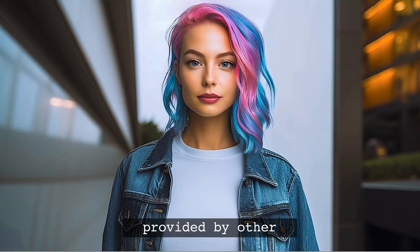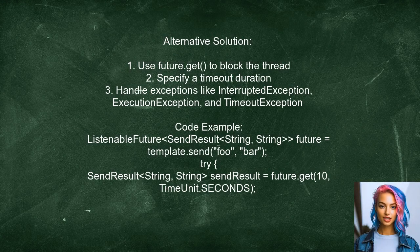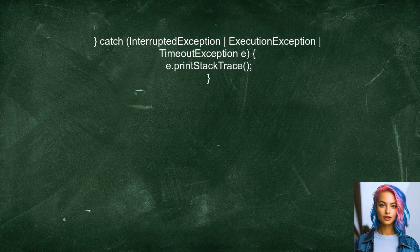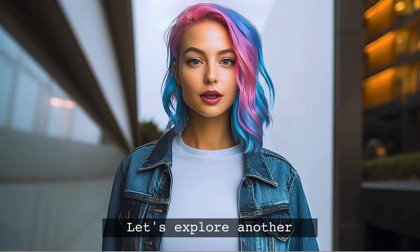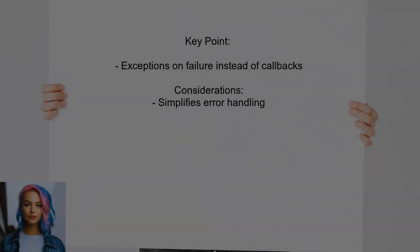Let's look at the answers provided by other users. An alternative approach suggested by another user is to block the calling thread until the result is available, using the future.get method to achieve this. Another user suggests using the get method on the ListenableFuture to wait for the result of the send operation before returning a response. This method will raise an exception on failure instead of invoking the on-error callback, which can simplify error handling.